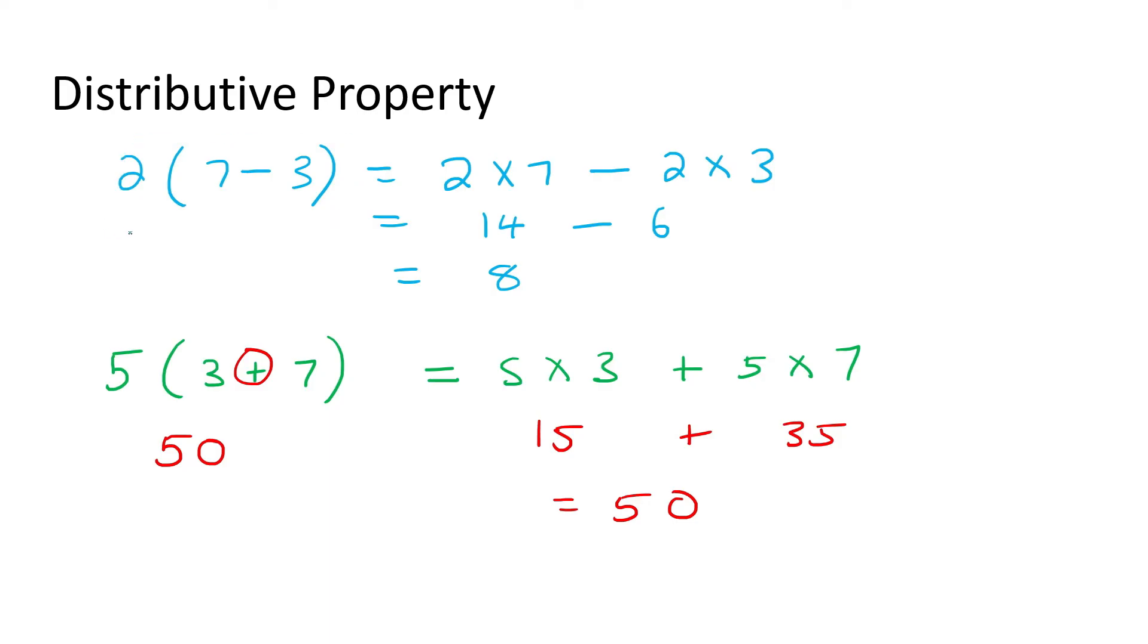So, can you see that there are brackets on this side, but then there's no brackets on this side? That is how you can identify the distributive property.